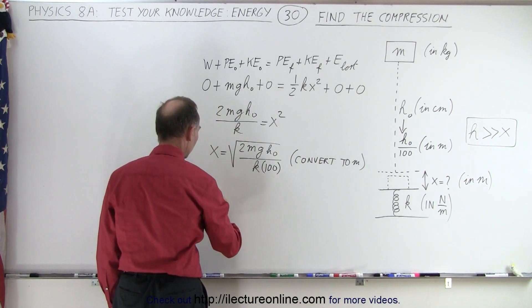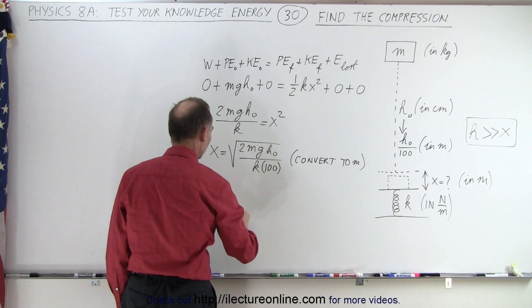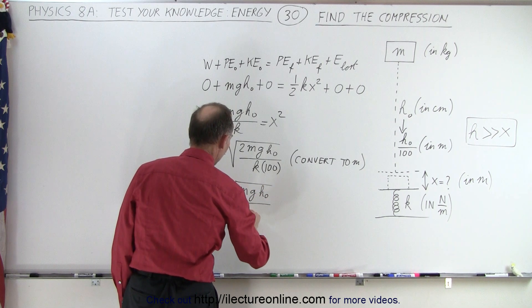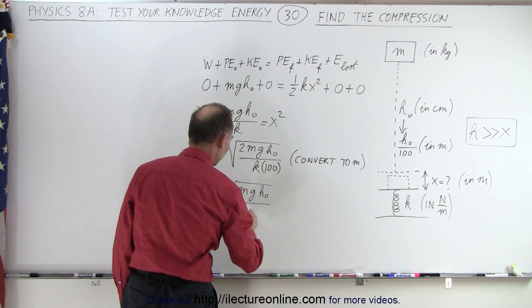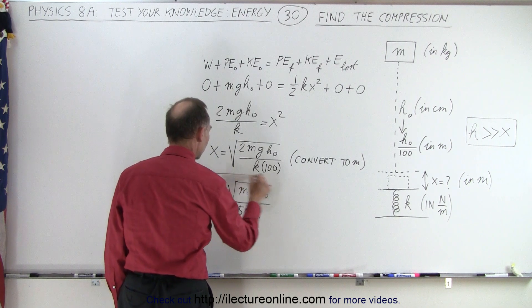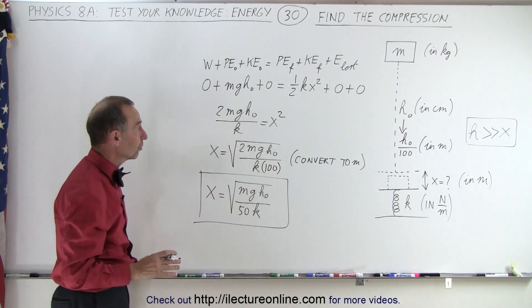And so the true answer would then be equal to the square root of mgh sub-naught divided by, well, that would be 2 divided by 100, which is 1 divided by 50, k. And that would be the correct answer in the proper units.